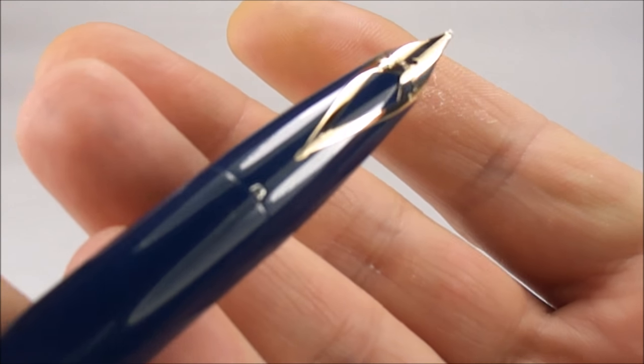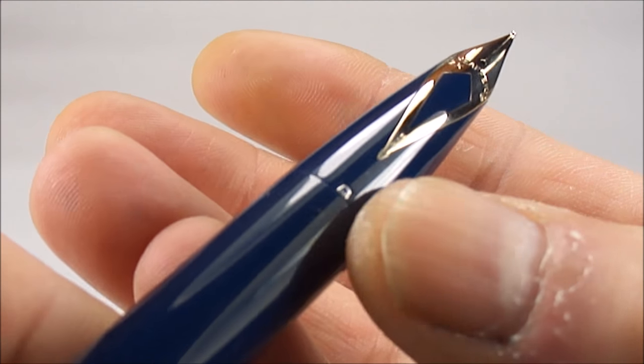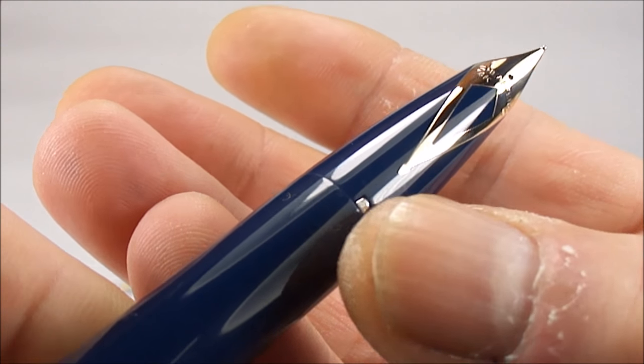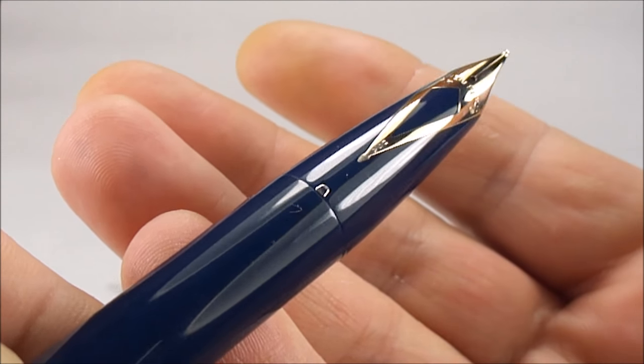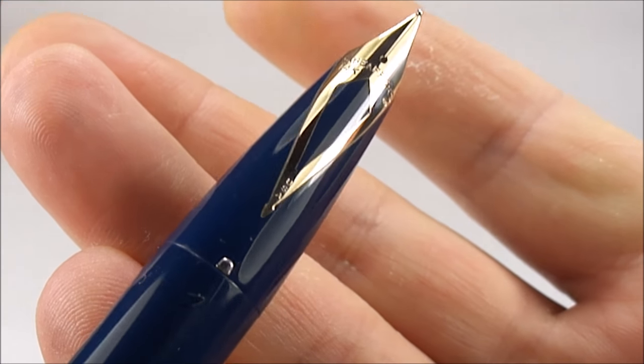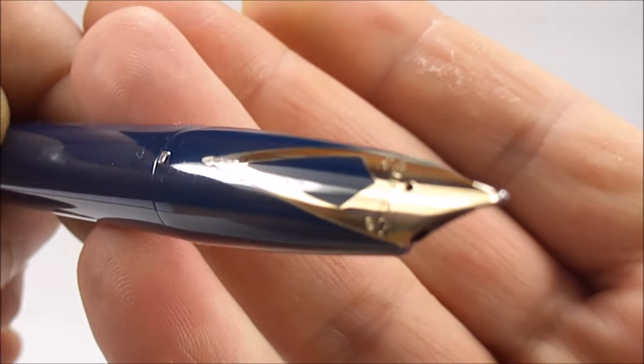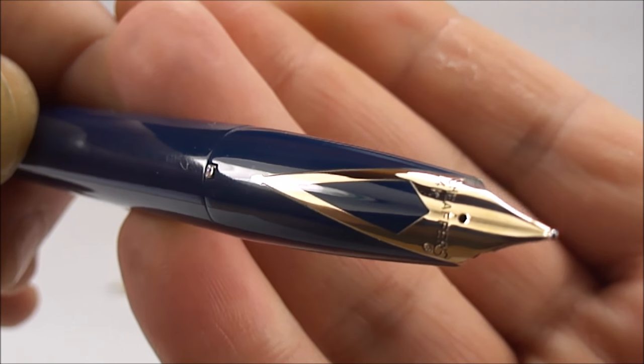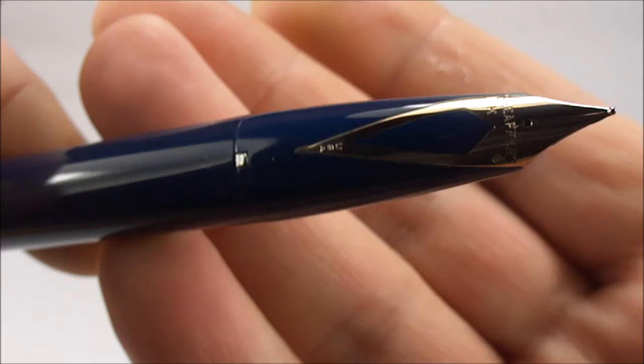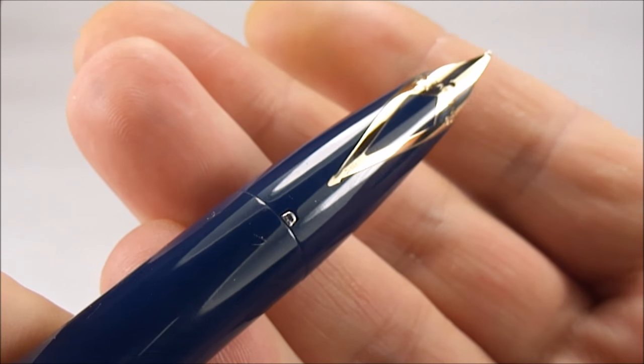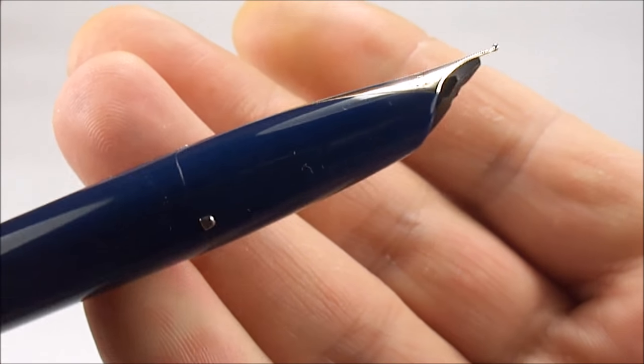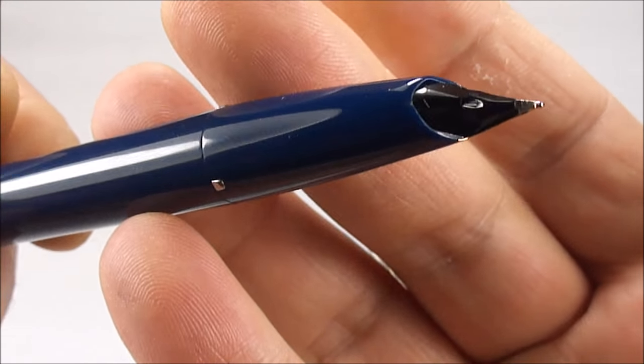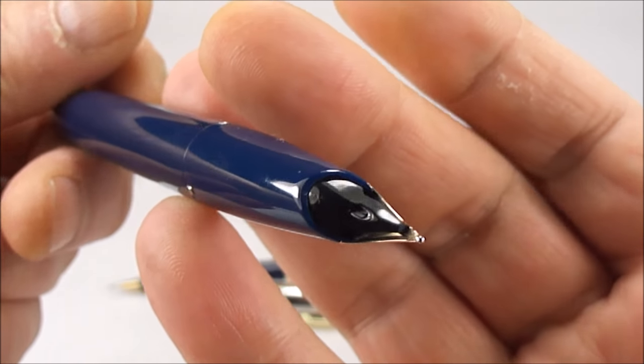Let's go up to the nib, straight to the nib. You'll notice it has these little notches here. That's actually the clutch ring for holding the cap on. And then if we take you up to the nib, let's give you different angles. What you'll notice, we've got a 14 carat gold nib.